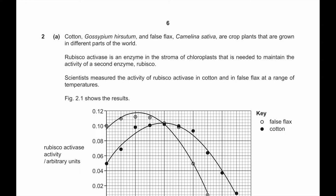Question number 2A. Cotton (Gossypium hirsutum) and False Flax (Camelina sativa) are crop plants that are grown in different parts of the world. Rubisco activase is an enzyme in the stroma of chloroplasts that is needed to maintain the activity of a second enzyme, Rubisco. Scientists measured the activity of Rubisco activase in cotton and in false flax at a range of temperatures. Figure 2.1 shows the results.